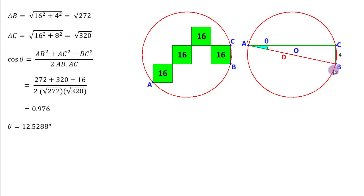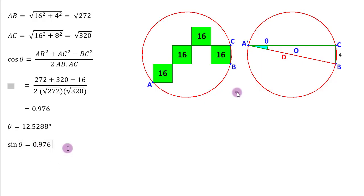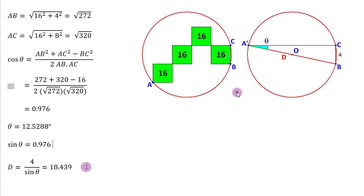That also makes the angle at C equal to 90 degrees, because it is now an angle subtended in a semicircle. So we have a right-angle triangle. We know this angle theta and its opposite side. So we can find the hypotenuse, which is the diameter. It is going to be the opposite side 4 divided by sin θ. Sin θ is 0.976, giving us diameter ≈ 18.439, and then the area as approximately 276 square units.